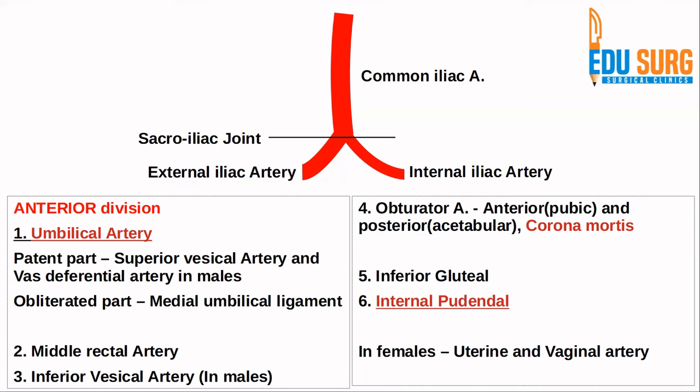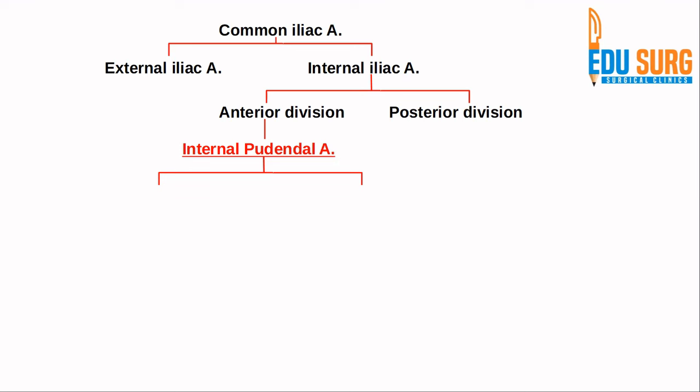In females, the anterior division of the internal iliac artery also gives rise to the uterine and vaginal arteries. In simplified terms, the anterior division supplies all the pelvic compartments: the anterior compartment contains the urinary bladder and vas deferens in males; the posterior compartment contains the rectum; and the middle compartment contains the uterus and vagina in females. If you are asked which division the internal pudendal artery belongs to, this flowchart will help — it is a branch of the anterior division of the internal iliac artery, which is itself a branch of the common iliac artery.